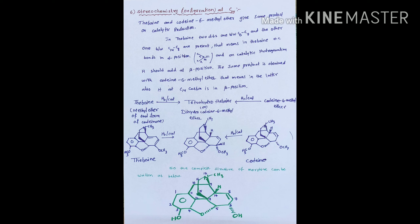Now we go for the discussion about the stereochemistry of morphine at C14 carbon. This can be understood by the catalytic hydrogenation of thebaine and codine-6-methyl ether. In thebaine, the C-C bonds are in the alpha position, and when this is subjected to catalytic hydrogenation, we get tetrahydrothebaine. Similarly, when codine-6-methyl ether is subjected to catalytic hydrogenation, the same product is obtained. That means the hydrogen at C14 should be in the beta position.